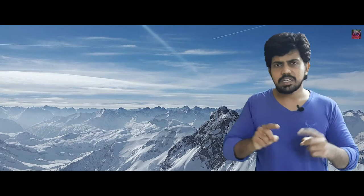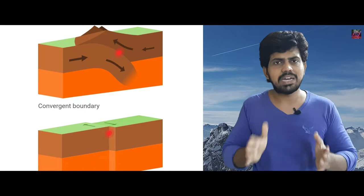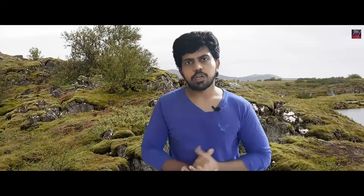These tectonic plates look like a puzzle, and they always move constantly. These movements include: if they move in opposite directions, it's called divergence; if they move directly toward each other, it is called convergence; and if they move sideways, it is called transform. These tectonic plates move around 2 centimeters per year — movements we cannot even feel, but they are recorded. These vibrations are what is called earthquakes.